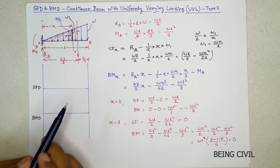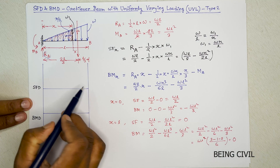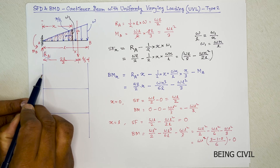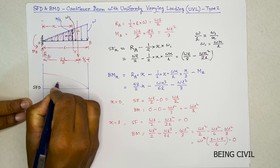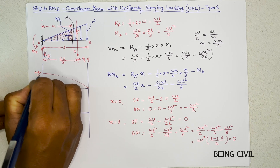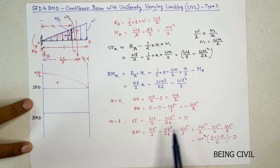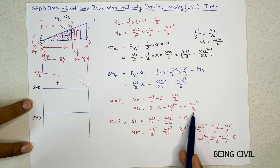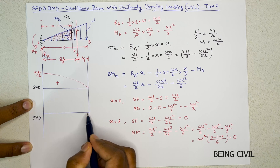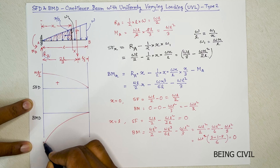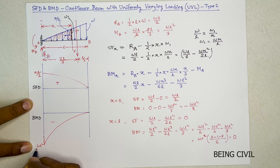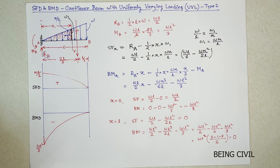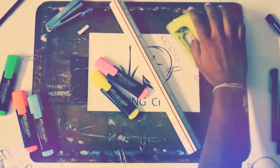The shear force is 0 at the free end and wl/2 at the fixed end — it follows a parabolic curve and is positive throughout. The bending moment is 0 at the free end and −wl²/3 at the fixed end — it follows a cubic curve and is negative. I hope you like this video; give it a thumbs up, share with your friends, and see you in the next video.